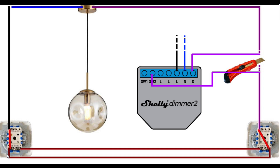Such devices operate with high voltage current on the light switch connectors. Therefore, as you can see in this example, you can connect the output wire from the light switch directly to any of the switch one or switch two connectors.